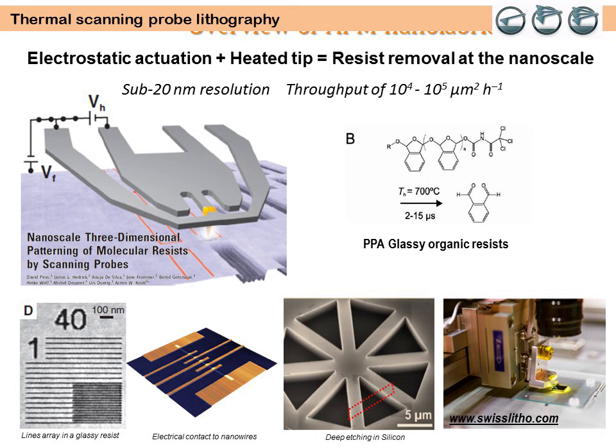The electrostatic attraction between the cantilever and the workpiece bends the cantilever and brings the tip into contact with the resist. At temperatures of up to 1000 degrees Celsius, the resist evaporates very efficiently without residues or contamination, leaving a tiny hole in the resist with the same geometry as the tip. The system is a complete lithographic tool with many possible employments, and is commercialized by Swiss Litho.